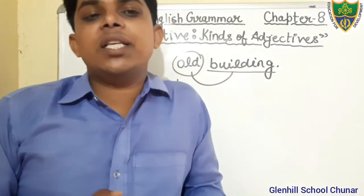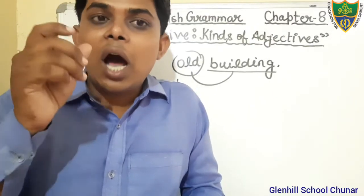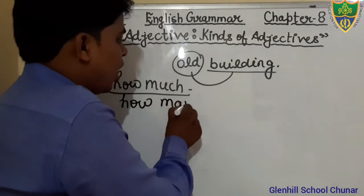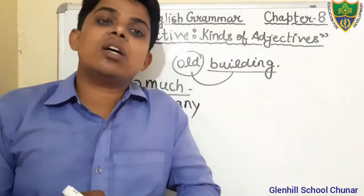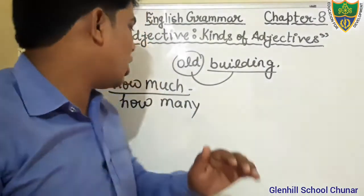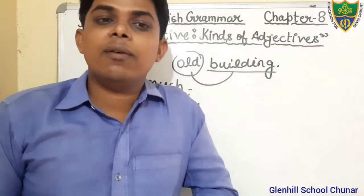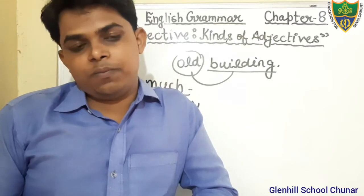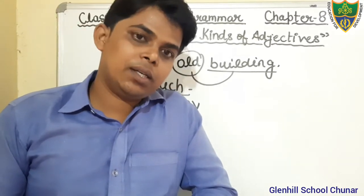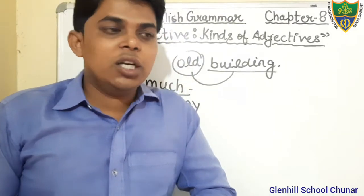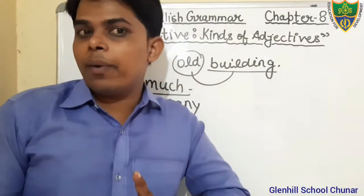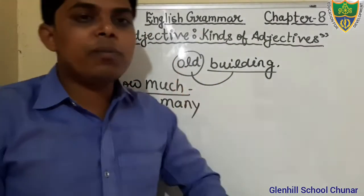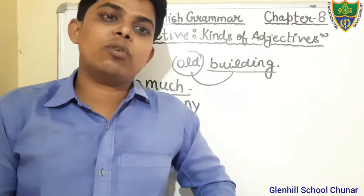Another kind is Adjective of Number. It denotes how many persons or things are meant. It gives the answer to the question 'how many.' For example: many girls, 100 boys — these we can count. Adjective of Quantity is uncountable, while Adjective of Number is countable. Adjective of Quantity answers 'how much,' and Adjective of Number answers 'how many.'